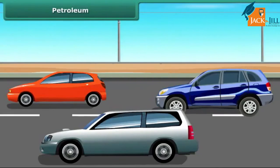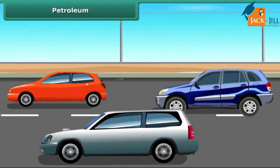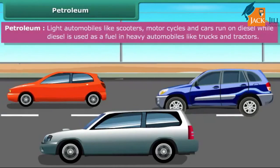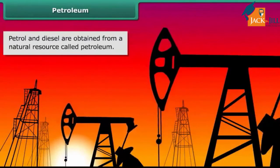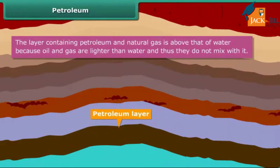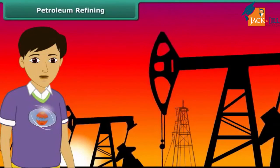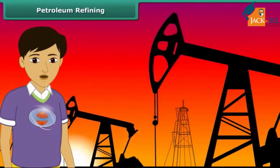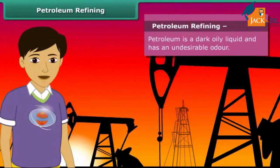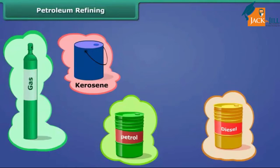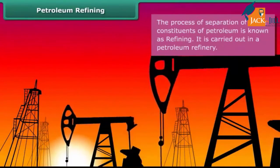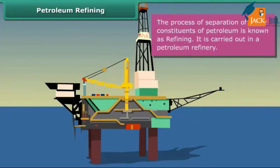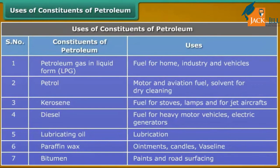Most luxury cars and vehicles run on petrol, diesel, or compressed natural gas, also known as CNG. Petrol and diesel are obtained from a natural resource called petroleum. Petroleum and natural gas deposits exist as a layer above the water layer. Petroleum is a dark, oily liquid made up of various components such as petroleum gas, petrol, diesel, kerosene, paraffin wax, and lubricating oil. All these components are separated by a process called refining, carried out in a petroleum refinery.